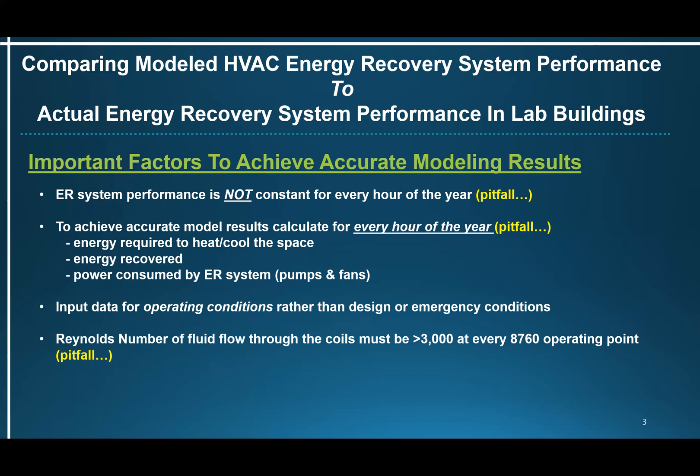And the Reynolds number. The Reynolds number of the fluid in the tubes of the energy recovery coils needs to be greater than 3000 to maintain turbulent flow. If it falls below 3000, the flow becomes partially laminar or even completely laminar, which destroys the heat transfer coefficient. Then the recovery performance of the system drops dramatically, even to the point where no energy is being recovered. So it's very important to ensure that the Reynolds number is calculated for every hour of the year and that it's always above 3000.